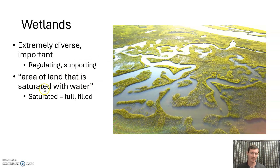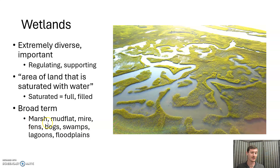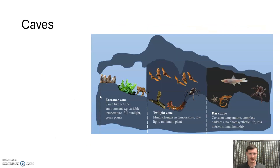A wetland is just an area of land that is saturated with water — saturated meaning full, you cannot put any more water in. This is a broad term that includes marshes, mudflats, mires, fens, bogs, swamps, lagoons, and floodplains — I believe fens and bogs differ by pH; I'll put it in the notes. All of these are wetlands. Hugely important, diverse, lots of life, very important, easily damaged, and often drained.